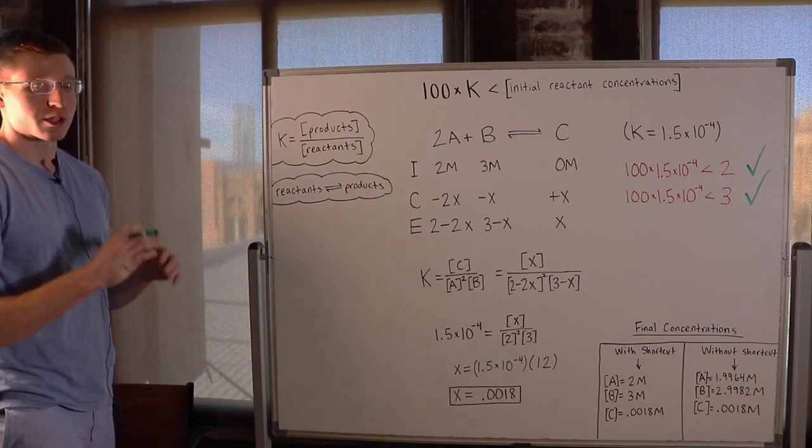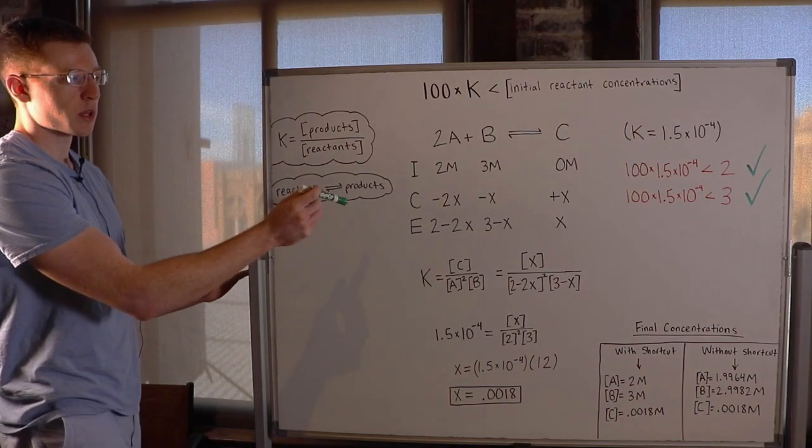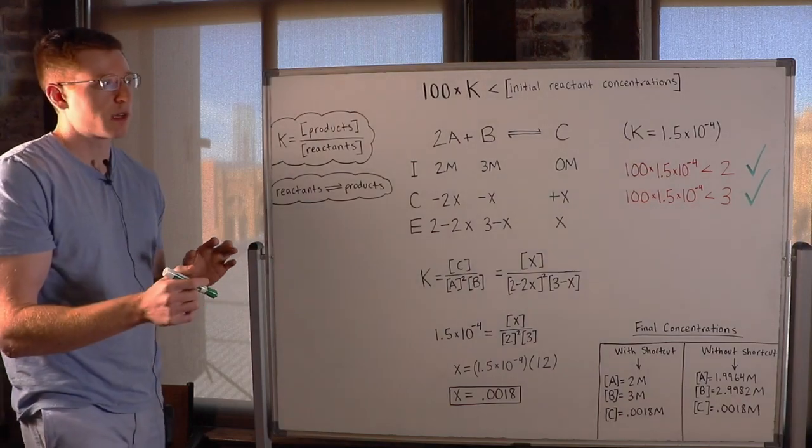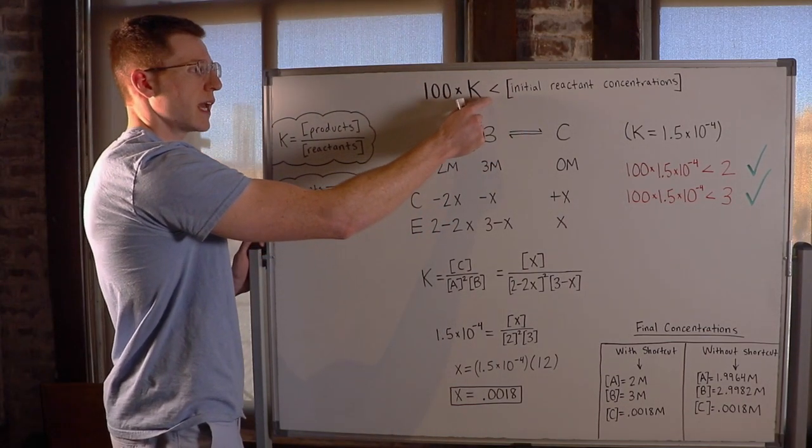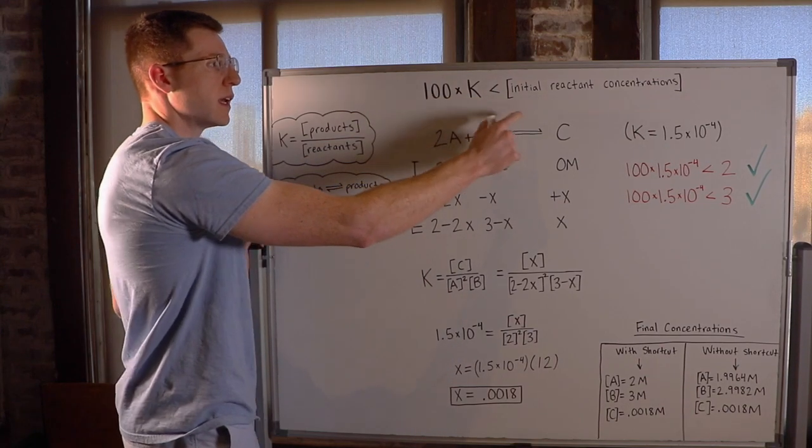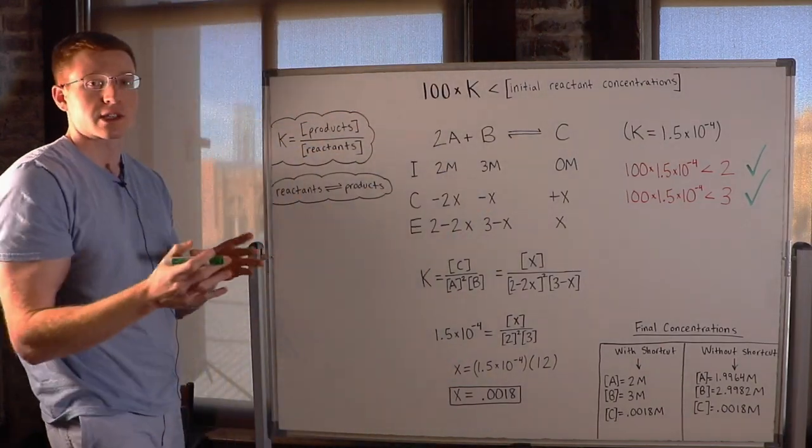In this video, I'm going to show you how you can use the shortcut rule in an equilibrium problem using an ICE table. So the shortcut rule applies if 100 times K, your equilibrium constant, is less than your initial reactant concentrations.